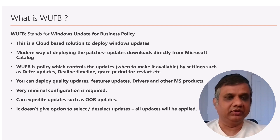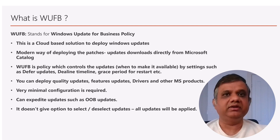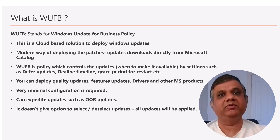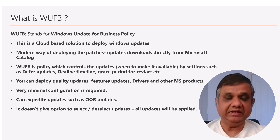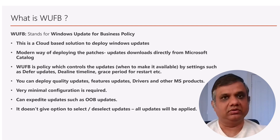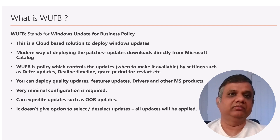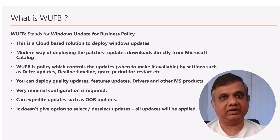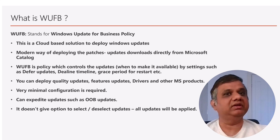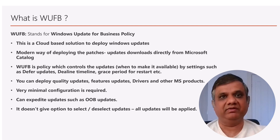What makes Windows Update for Business different from a home PC experience is that the administrator has more control over when patches are offered. You can defer updates for a specified number of days after release. Once the defer period expires, the update is offered to the user. If the user doesn't install it, a deadline kicks in. After the deadline, a grace period controls restart behavior, keeping the user notified via toast notifications in the taskbar.